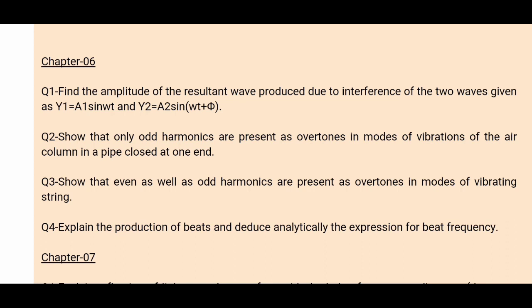Question number 4: explain the production of beats and deduce analytically the expression for beat frequency. The answer is on page 150 to 151. Beat formation occurs due to waxing and waning — when alternating waxing and waning takes place, beats are produced. Using those equations, you derive the net resultant displacement formula y = a sin(ωt), and then using the resultant amplitude formula, you find the beat frequency: n = n1 − n2.